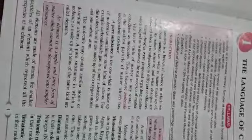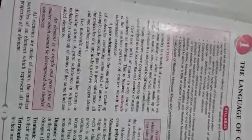Pure substances whose molecules are made up of the same kind of atom are called elements. So the definition of element is: element is the simple and pure form of matter which cannot decompose into simpler substances. All elements are made up of atoms. The smallest particle of element which represents all the properties of an element is called an atom.